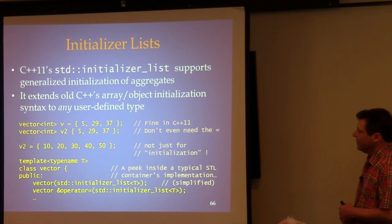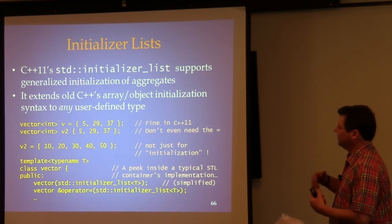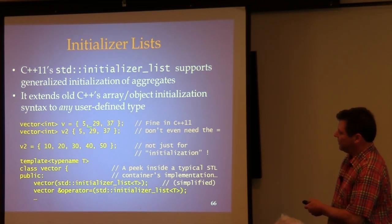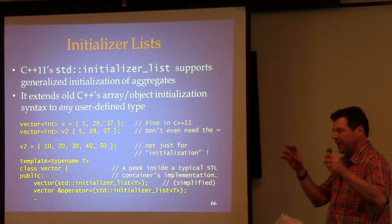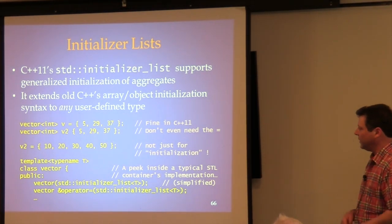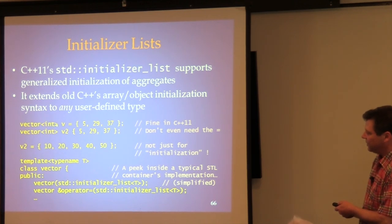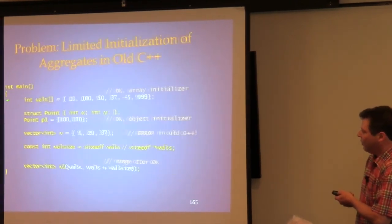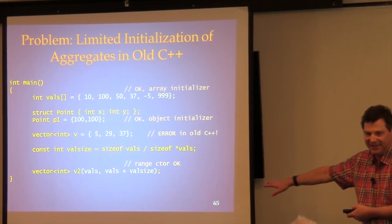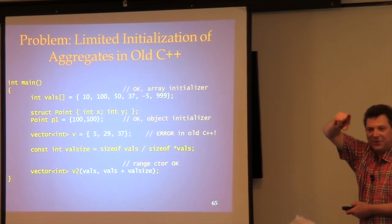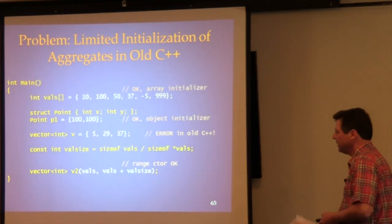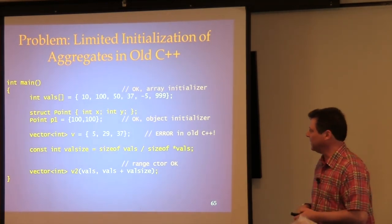The solution is the standard initializer list. The compiler, when it sees a pair of curly braces being used as an initializer for a class type, turns it into a `std::initializer_list` object, and there's an overload of the constructor for that container that takes an initializer list. If you use `auto` with an initializer list, you get `initializer_list<something>` as the type, not what you probably intended.